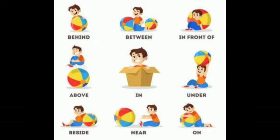Now we will see these examples with the help of this picture. You can see a boy behind the ball. A boy is sitting between the balls. A boy is sitting in front of the ball. A boy is sitting above the ball. A boy is sitting under the ball. A boy is sitting beside the ball. The boy is near the ball. And the boy is on the ball.